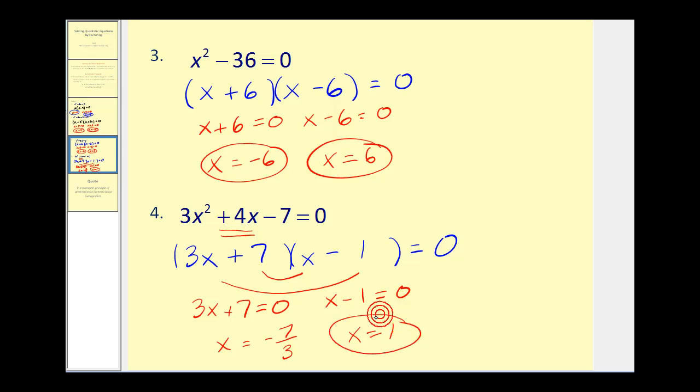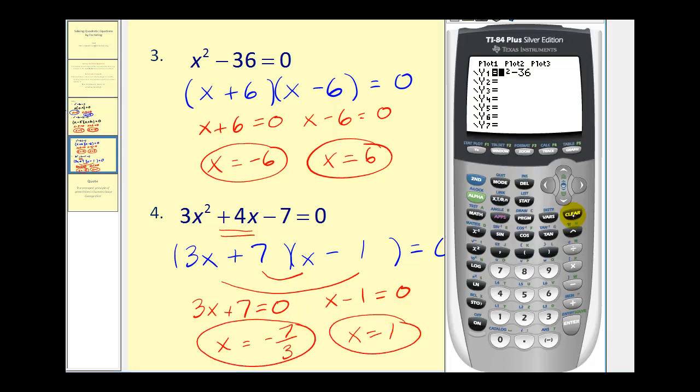And we might as well go ahead and take a look at this one graphically as well. Type in the left side into y one. Go ahead and press graph. Now, we do have an x-intercept here of one. Let's check to make sure this is negative seven-thirds.